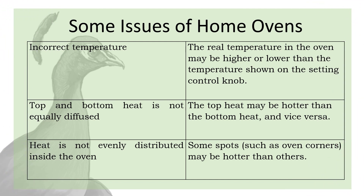Some issues with ovens: Incorrect temperature — the real temperature in the oven may be higher or lower than the temperature shown on the setting control knob. Top and bottom heat may not be equally diffused; the top heat may be hotter than the bottom heat and vice versa. Heat may not be evenly distributed inside the oven — some spots such as oven corners may be hotter than others.